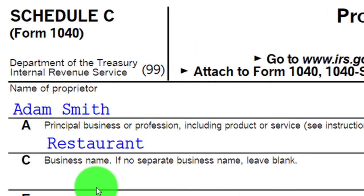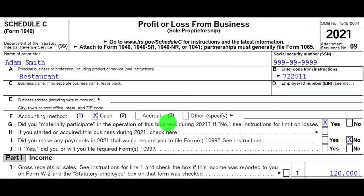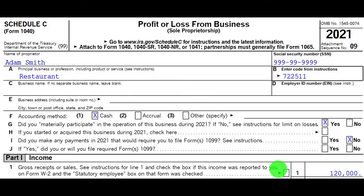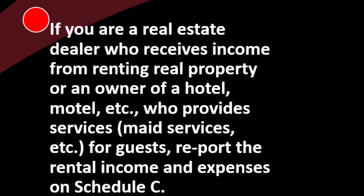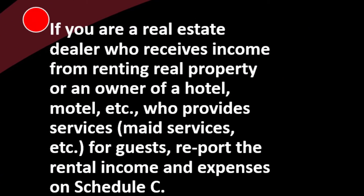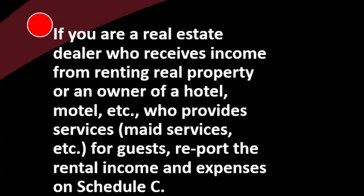Here is the Schedule C, basically an income statement with income and expenses. Looking at the income side — so now we've got real estate rents. If you are a real estate dealer who receives income from renting real property, or an owner of a hotel, motel, etc., who provides services like maid services for guests, report the rental income and expenses on Schedule C.